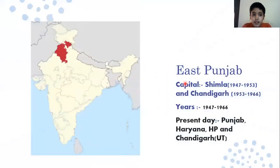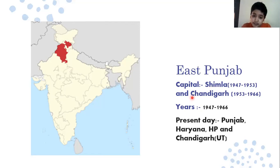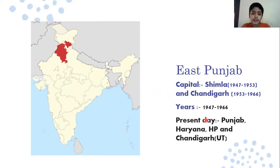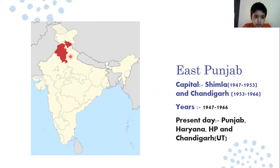Next is East Punjab. The capital was Simla from 1947 to 1953, then Chandigarh from 1953 to 1966. The total time period it was known as East Punjab was 1947 to 1966. Present day it covers Punjab, Haryana, Himachal Pradesh, and Chandigarh. Chandigarh is the capital of both Punjab and Haryana.